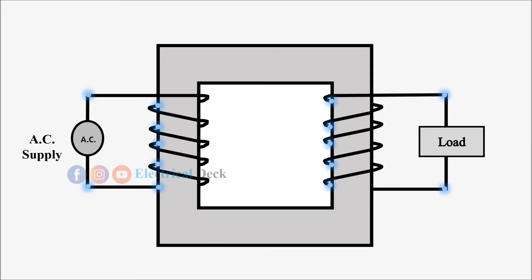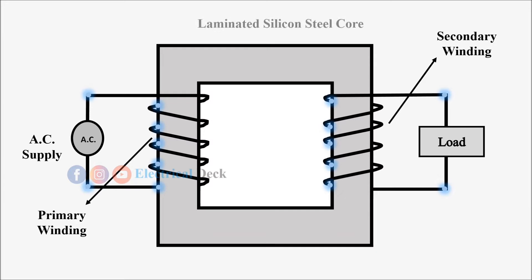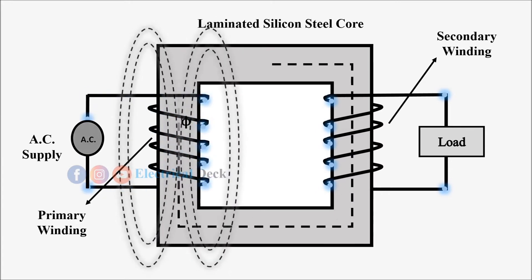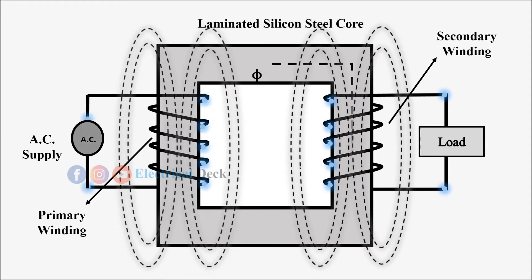The basic principle on which the transformer works is Faraday's law of electromagnetic induction, or mutual induction between two coils. The transformer consists of two separate windings — primary and secondary — placed over a laminated silicon steel core. When an alternating supply is given to the primary winding, it sets up an alternating flux, which circulates through the core of the transformer and links with the secondary winding.